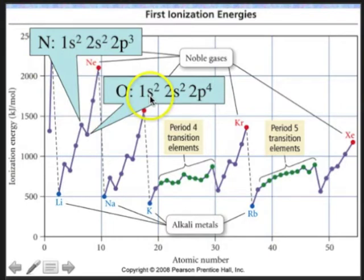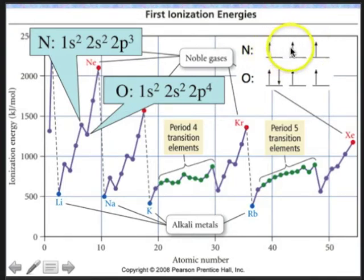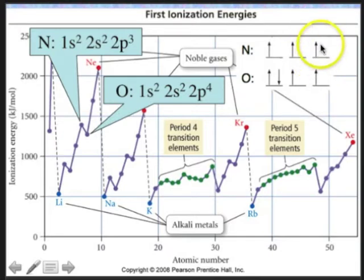The next hiccup is nitrogen and oxygen. Nitrogen is 1s2, 2s2, 2p3, and oxygen is 1s2, 2s2, 2p4 — and oxygen has a slightly lower ionization energy. In nitrogen, each p orbital has a single electron (px, py, pz). Oxygen has a fourth electron that must pair up in the same orbital, and paired electrons repel each other, raising the energy. So it's easier to remove that fourth electron from oxygen, which is why oxygen has a lower ionization energy than nitrogen.